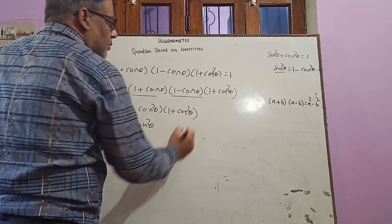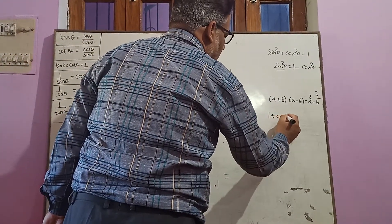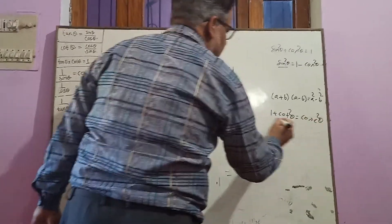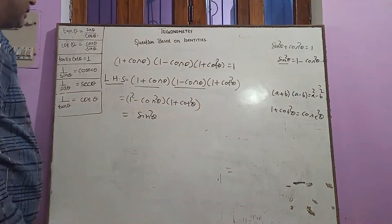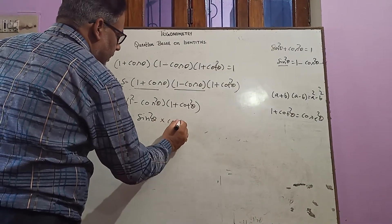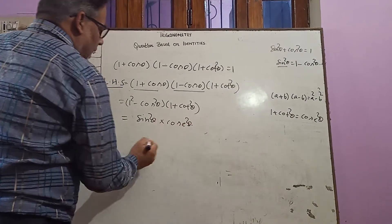And 1 + cot²θ equals to cosec²θ, this is our trigonometrical identity. So in place of this we just write it here as cosec²θ.